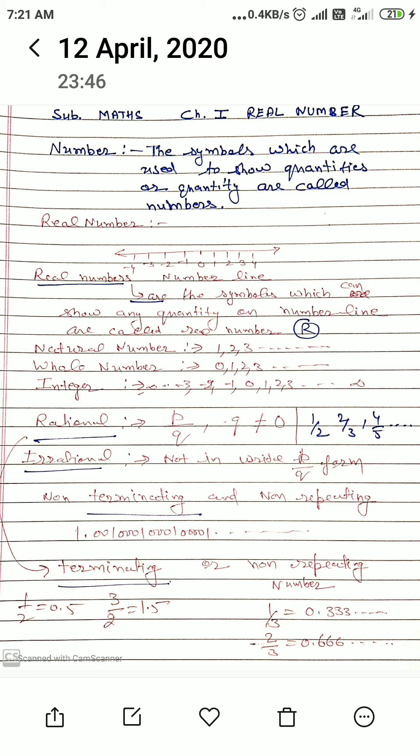Now come to integer: zero, one, two, three up to infinity, minus one, minus two, minus three, and so on up to minus infinity. These are called integers. It is denoted by capital Z.